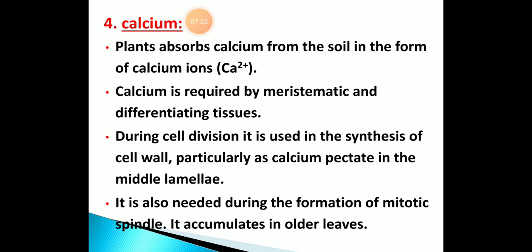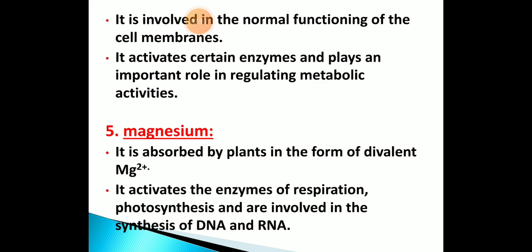Calcium is absorbed from the soil in the form of calcium ions. It is required for meristematic differentiation of tissues during cell division, and is mainly used in the synthesis of cell walls — particularly calcium pectate in the middle lamella layers. It is also needed during formation of the mitotic spindle and accumulates in older leaves.